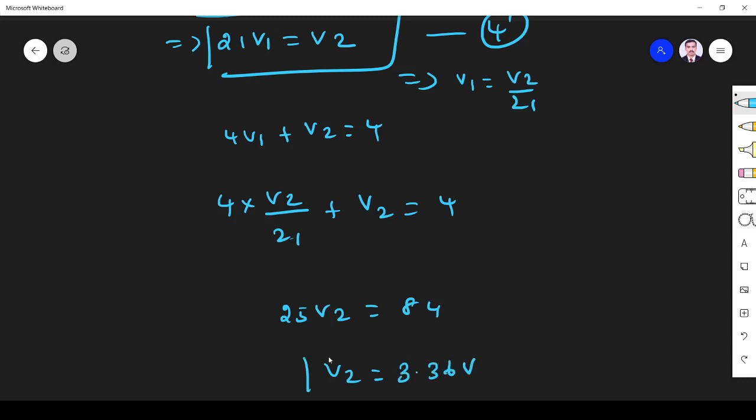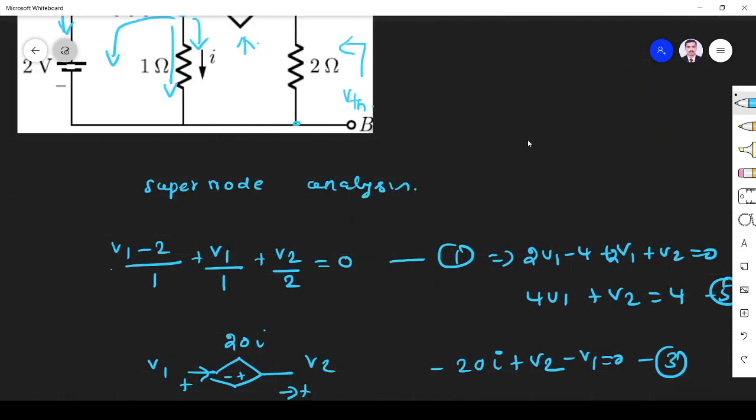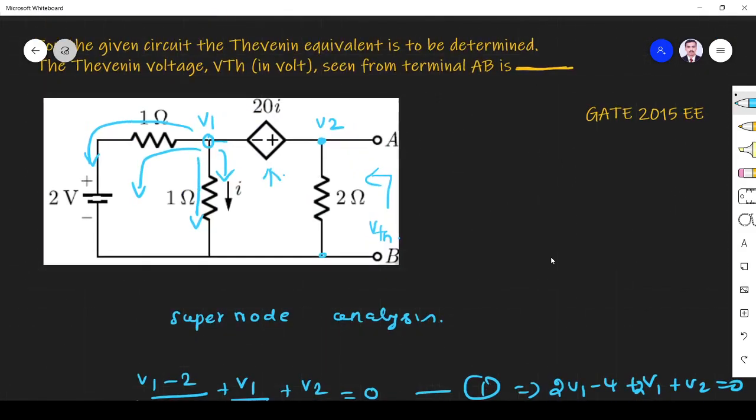We got V2 = 3.36 volts. Why I find V2? I don't mind about V1 because V2 is voltage across this 2 ohm, so that is my voltage across AB. V2 is nothing but VAB, so that is VTh. Answer is 3.36 volts. No need to find V1. This voltage is same as this voltage, so this is 3.36 volts. Thank you.